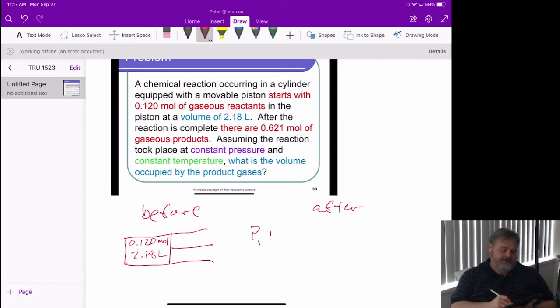And because the pressure and temperature are constant, what that means is afterwards, if we have some sort of chemical reaction taking place in there, we're going to end up with 0.621 moles and some new volume afterwards.